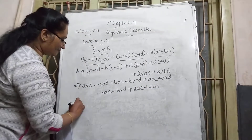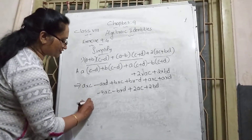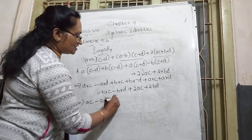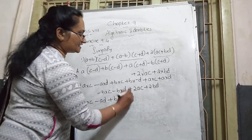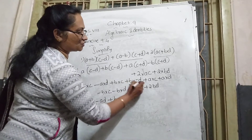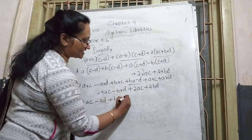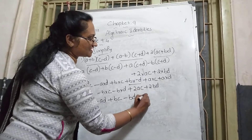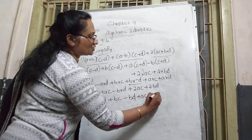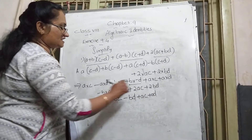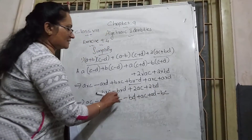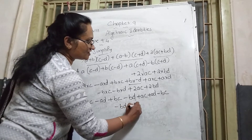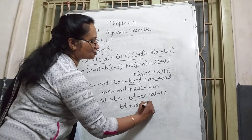The last two terms have coefficient 2: 2 into ac gives 2ac, and 2 into bd gives 2bd. After multiplication: ac − ad + bc − bd + ac + ad − bc − bd + 2ac + 2bd.